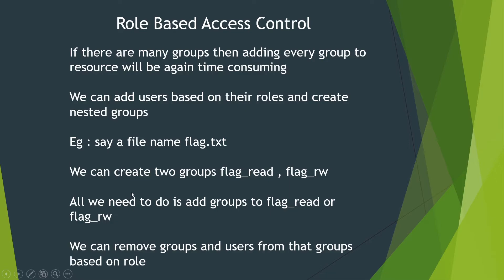Every student is equal — each and every student gets the same role, which is why it's called role-based access control. We can remove groups and users from their groups based on roles. For example, flag.txt has two groups: flag_read and flag_read_write. If CSE second year students want to access this file, we just add that group into the appropriate group and everyone can access flag.txt. That is role-based access control.